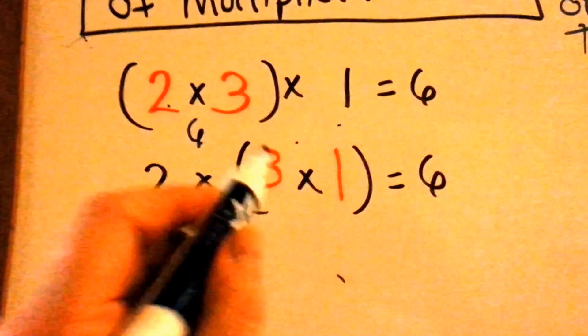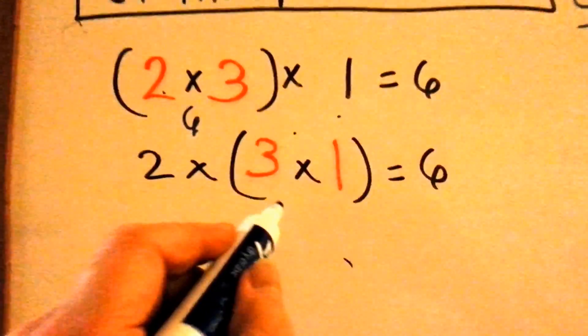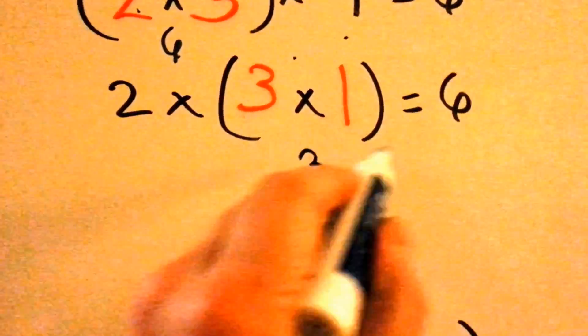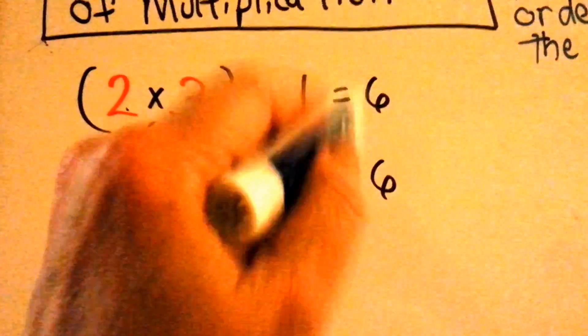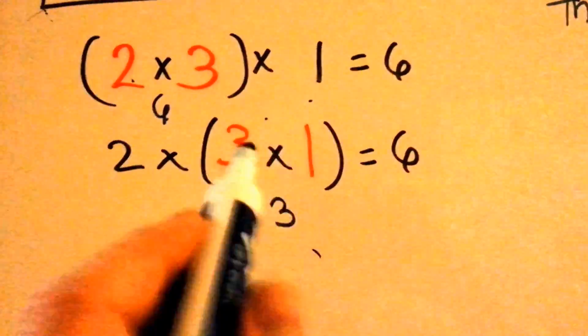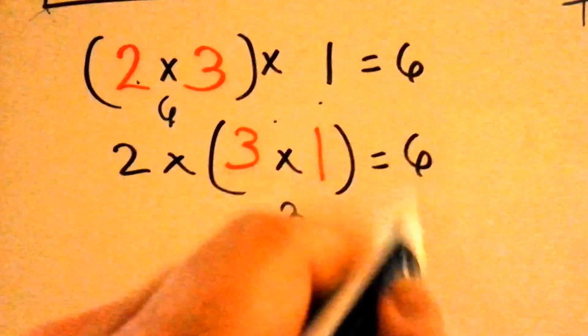You always do parentheses first, so let's see now. Three times one is three. Two times three is six. See? It doesn't matter. If you multiply these parentheses first or these parentheses first, the answer is going to stay six.